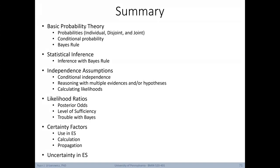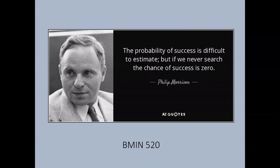In today's lecture, we've covered the basics of probability theory. We talked about statistical inference with focus on the Bayes rule. We discussed independence assumptions, including conditional independence, and reasoning with multiple evidences or hypotheses. Then we moved into likelihood ratios, learning about posterior odds, level of sufficiency, and some issues with Bayesian approaches. Next, we discussed certainty factors, their use in expert systems, their calculation, and their propagation through rule chains. And finally, we had a discussion about uncertainty in expert systems as a whole.